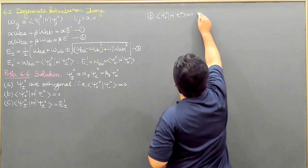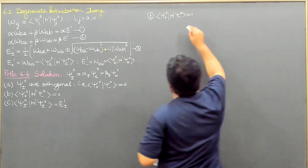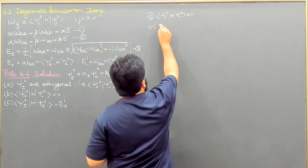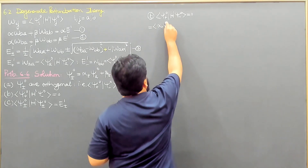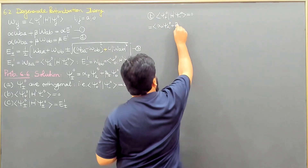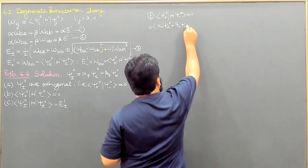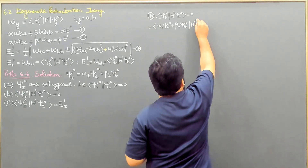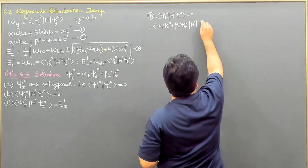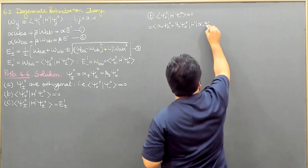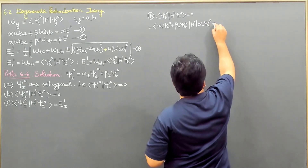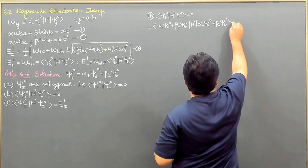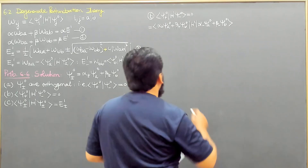We will put the values of ψ⁺⁰ and ψ⁻⁰. ψ⁺⁰ is α⁺|ψ_A⁰⟩ + β⁺|ψ_B⁰⟩, and ψ⁻⁰ is α⁻|ψ_A⁰⟩ + β⁻|ψ_B⁰⟩. Now we multiply them with the Hamiltonian perturbation H'.